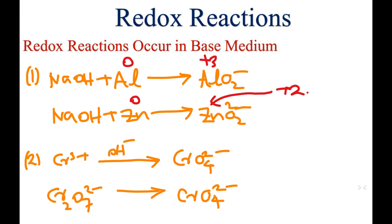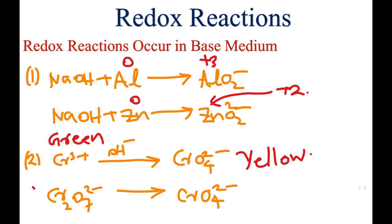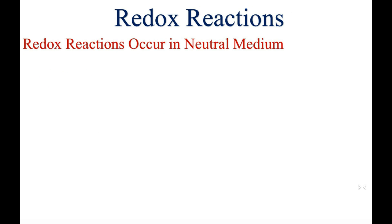In alkaline medium, Cr³⁺ becomes CrO₄²⁻. Cr³⁺ takes green color and CrO₄²⁻ takes yellow color. Dichromate also becomes CrO₄²⁻ in alkaline medium, meaning orange becomes yellow.